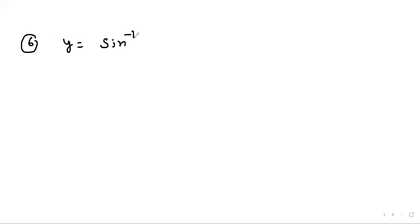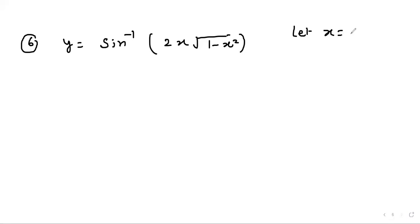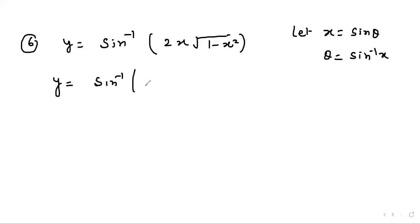Question 6: y = sin⁻¹(2x√(1 − x²)). Let x = sin θ, so θ = sin⁻¹ x. Substituting, y = sin⁻¹(2 sin θ √(1 − sin² θ)). Inside the root, 1 − sin² θ = cos² θ, and removing the root gives cos θ.